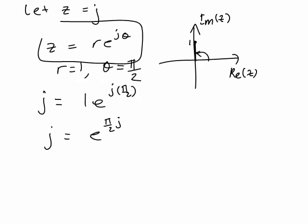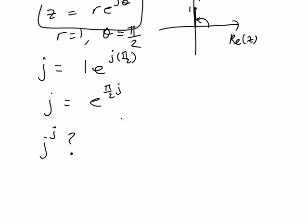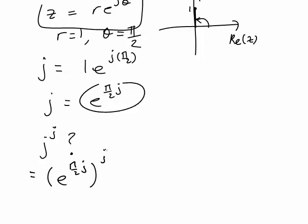But how does this help us? We didn't want to just work out j — we wanted to know what happens when we raise j to the power of j. This form is helpful because having it in exponential form allows us to use index laws. So j to the power of j is e to the pi on 2 times j, all raised to the power of j. When we have e to the power of a, all to the power of b, it just becomes e to the power of a times b.